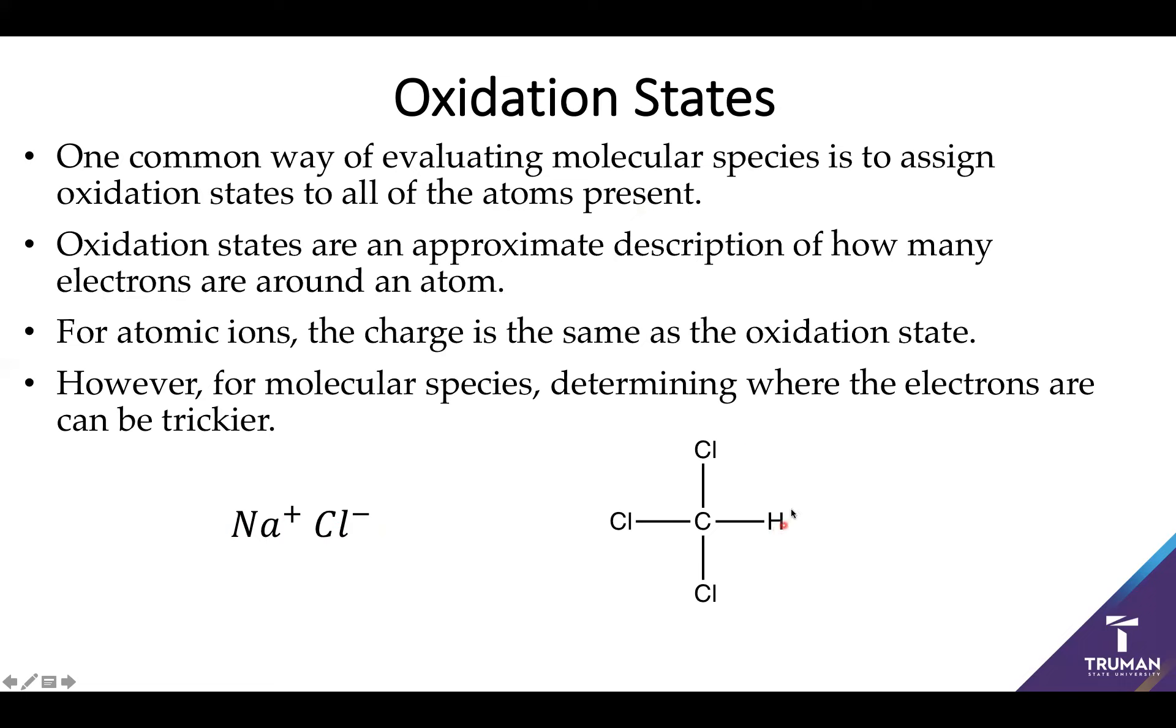So let's look at chloroform. It's overall neutral. But not all of these atoms want electrons equally as much. We know that chlorine loves electrons. We know hydrogen and carbon are somewhere in between. So how can we figure out how many extra electrons those chlorines have grabbed? So we can do this with oxidation state.